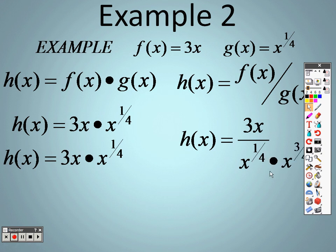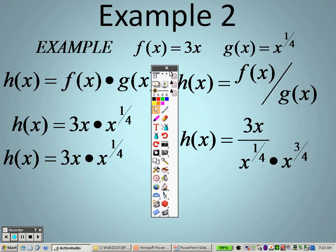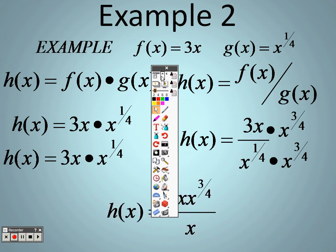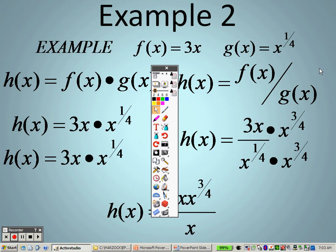So what that means is, I am going to take x to the 3 fourths on both the top and the bottom. So 1 fourth and 3 fourths is 1 whole x, which is what we have here. So that's 1 whole x.